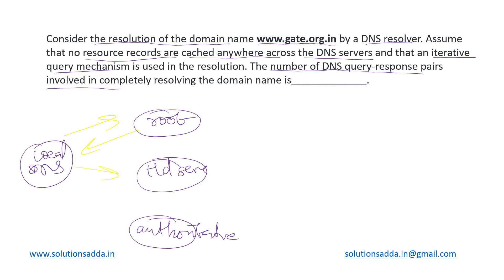Then it goes to the TLD server and gets a response, then goes to the authoritative server and comes back with a response, and the domain name is completely resolved. But in our case, as we can see in this address, we have both .org and .in, so there are two top-level domains involved.